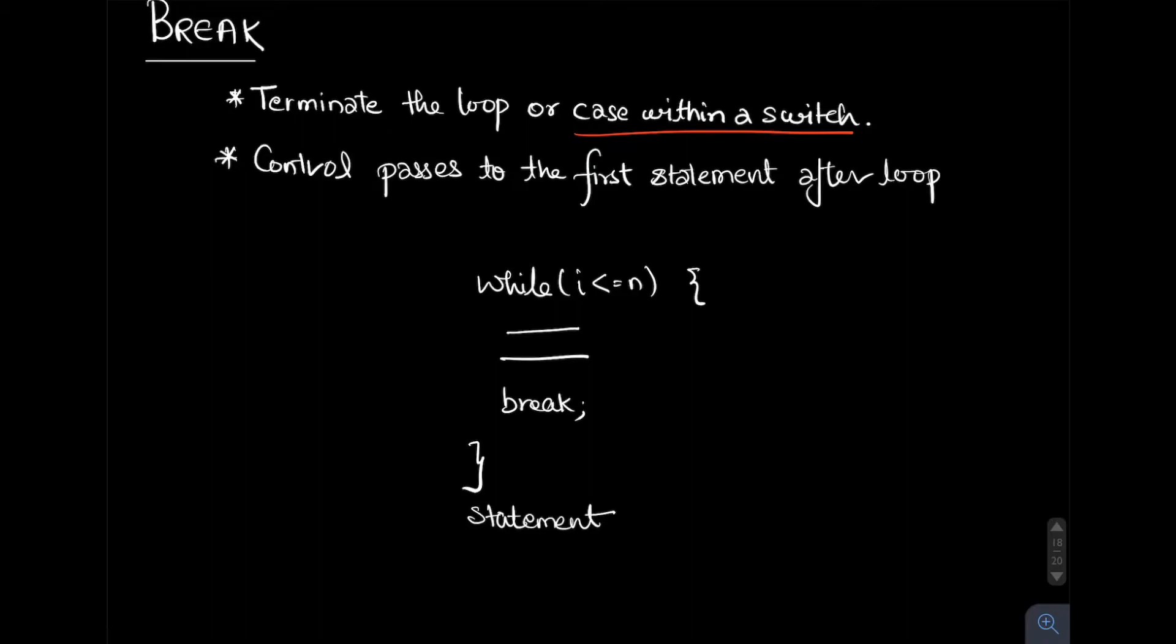When break gets evaluated, the control passes to the first statement after the loop. Let's see with an example. I have written a while statement with statements inside. Generally, execution goes through the while condition, then statement one, statement two. If the break statement gets executed, the loop will get terminated and control will pass to the statement after the loop. Instead of the loop going in a cyclic flow, the loop gets terminated on encountering break and control flows to the first statement after the loop body.